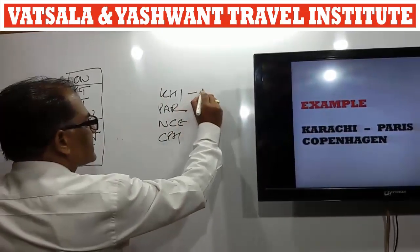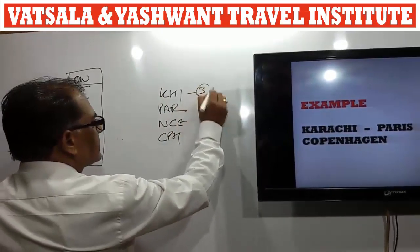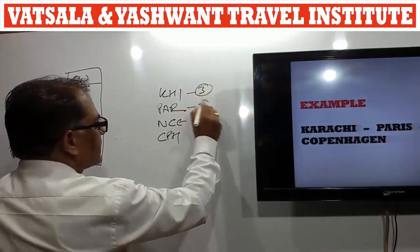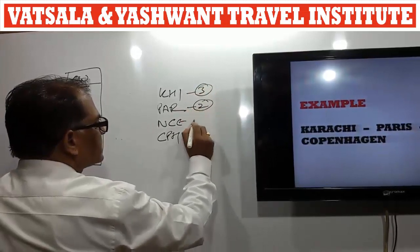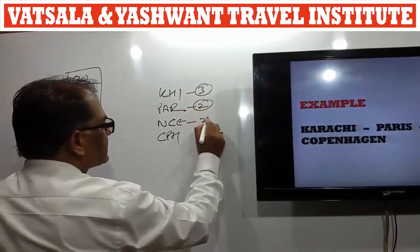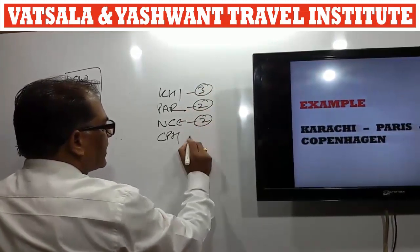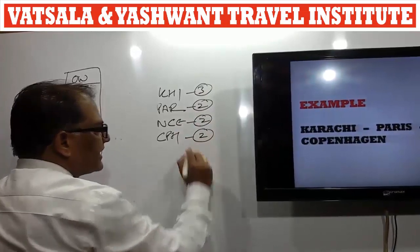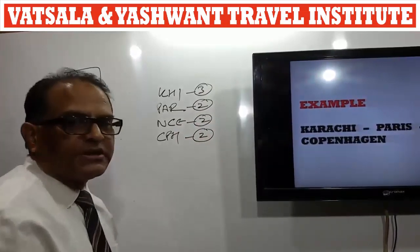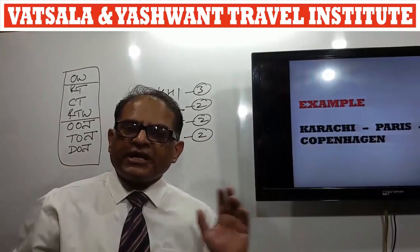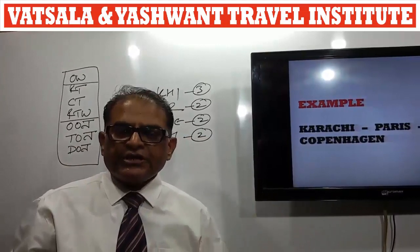Karachi, Pakistan is in Area 3. Paris, France is in Area 2. Nice, France is in Area 2. And Copenhagen, Denmark is in Area 2. This journey is between Area 3 and Area 2.